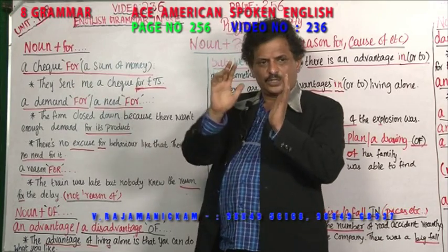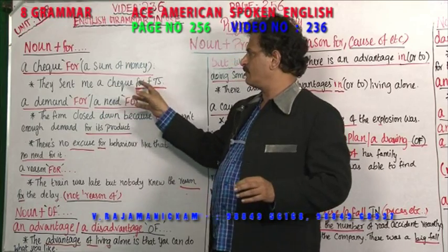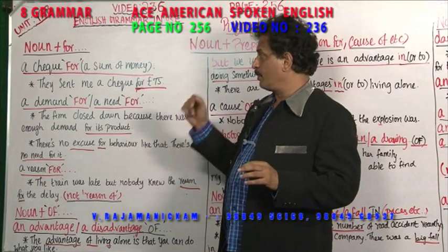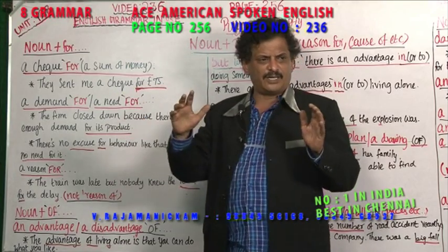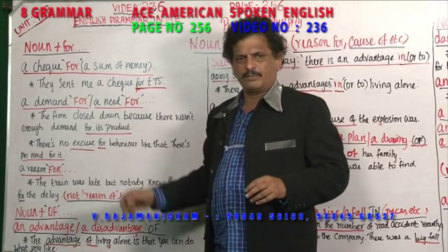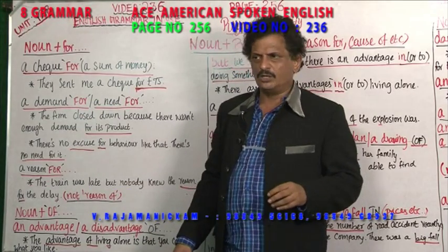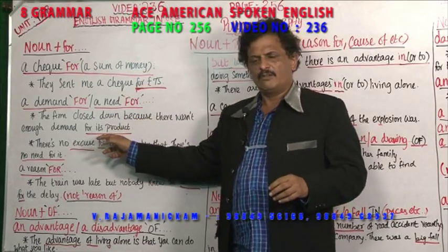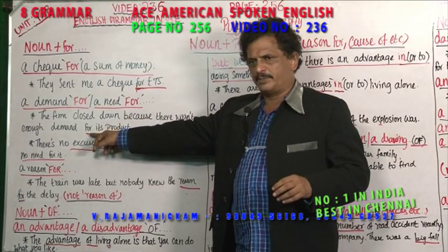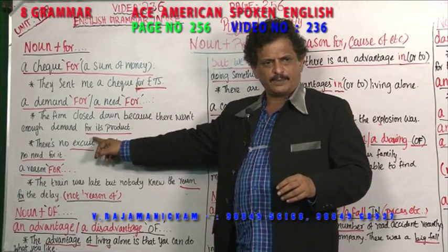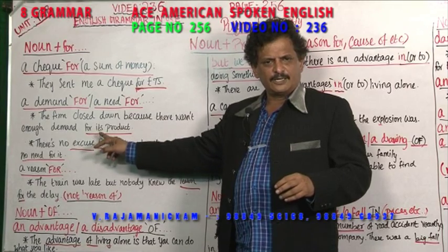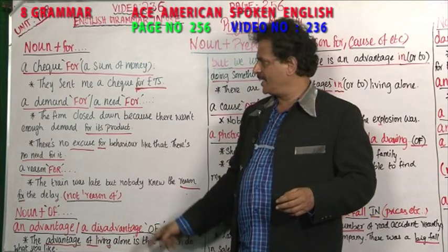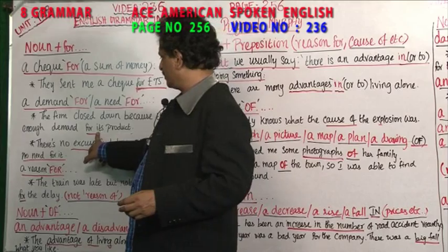They sent me a check for 75 pounds — check for, preposition for. Demand for — the firm closed down because there wasn't enough demand for its products.